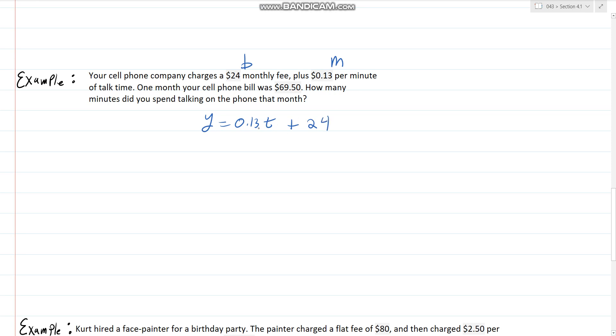So now we can solve how many minutes it must have been. $69.50 equals 0.13t plus 24. We can solve for t and it looks like t is going to equal 350 minutes. I just subtract 24 on both sides and divided by that 0.13.